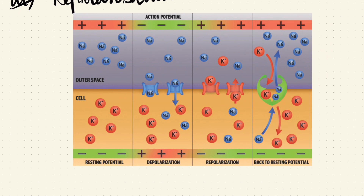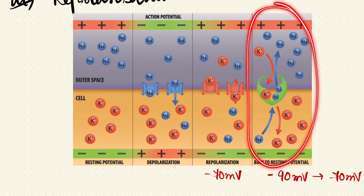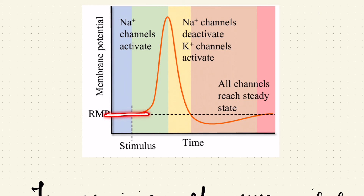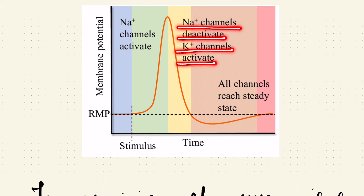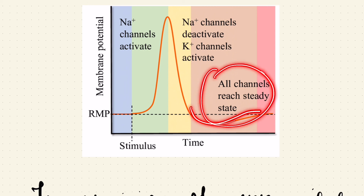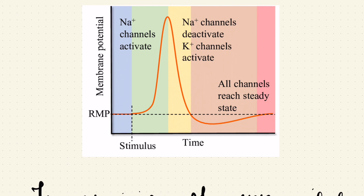In repolarization the neuron goes back to about minus 70 millivolts, but the ion balance is still disturbed. During hyperpolarization it overshoots to about minus 90 millivolts, then returns to minus 70 millivolts as the sodium-potassium ATPase restores the correct ion configuration — more potassium inside and more sodium outside. This completes the full cycle of nerve conduction: resting membrane potential → depolarization → repolarization → hyperpolarization → back to resting state.